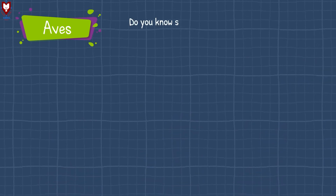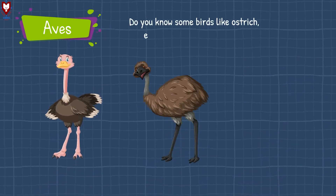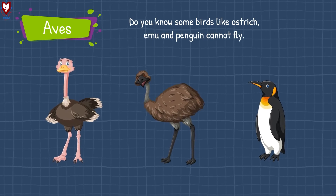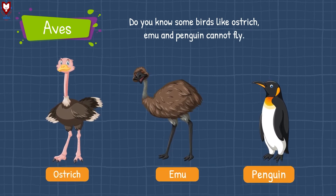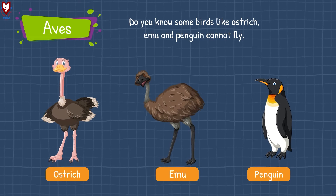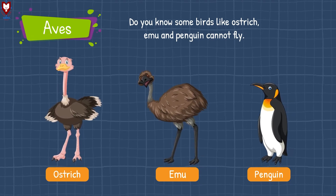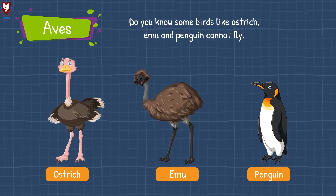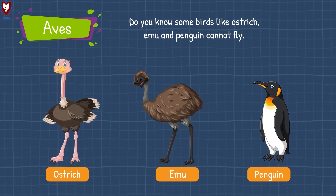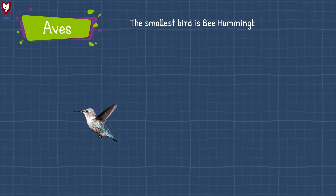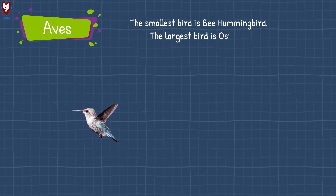Do you know some birds like ostriches, emu, and penguin cannot fly? Their body is very heavy and their wings are underdeveloped. The smallest bird in the world is the bee hummingbird and the largest bird in the world is the ostrich.